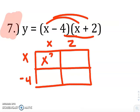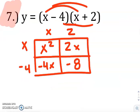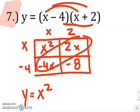So x times x is x squared, x times 2 is 2x, x times negative 4 is negative 4x, negative 4 times 2 is negative 8. So you get y equals x squared, negative 4x plus 2x is negative 2x minus 8.